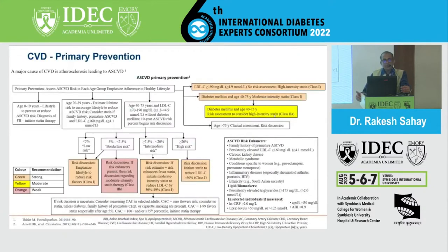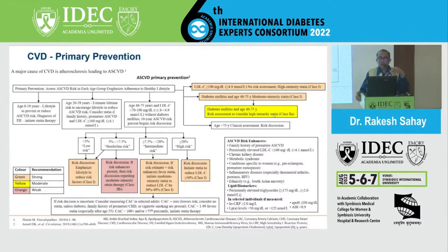Over the years there has been a change in understanding about goals of statin therapy. The 2018 AHA-ACC algorithm suggests for primary prevention: a class 1 indication to start statin in all those with LDL more than 190. Those with diabetes more than 40 years should all be on statin. For diabetics aged 40 to 75, risk assessment should be done — those with previous cardiovascular disease or multiple risk factors need a higher intensity statin.